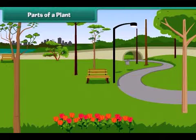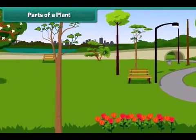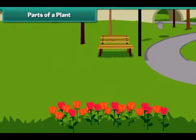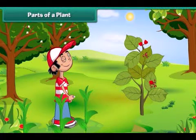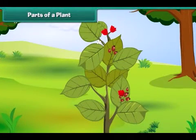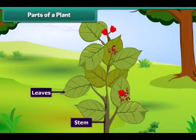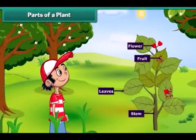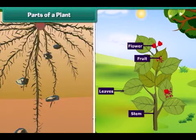Dear friends, as we can see around us, there are a lot of varieties of plants and trees. They are all green in colour and provide ease to our eyes. But have you ever observed a plant closely? You can see some major parts such as stem, leaves, flowers and fruits above the ground. But do you know that some part is also hidden under the ground? This part is called root.